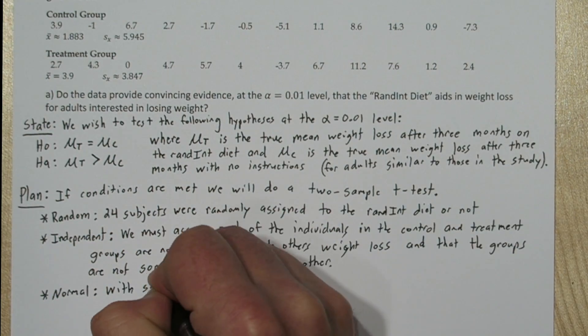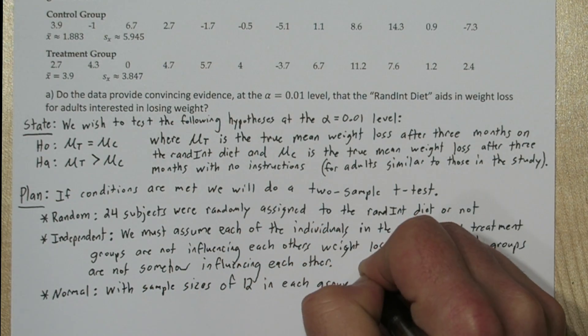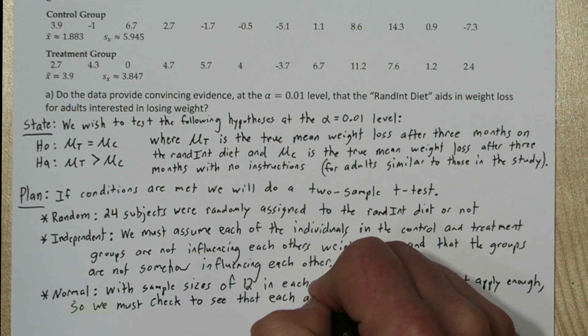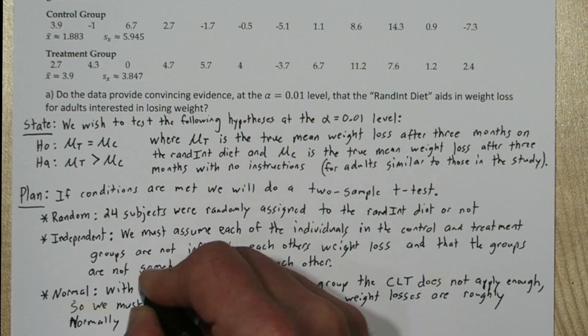Now our sample sizes are only 12, and that's too small for the central limit theorem to completely apply. So we have to check that the weight losses in each group are roughly normally distributed.